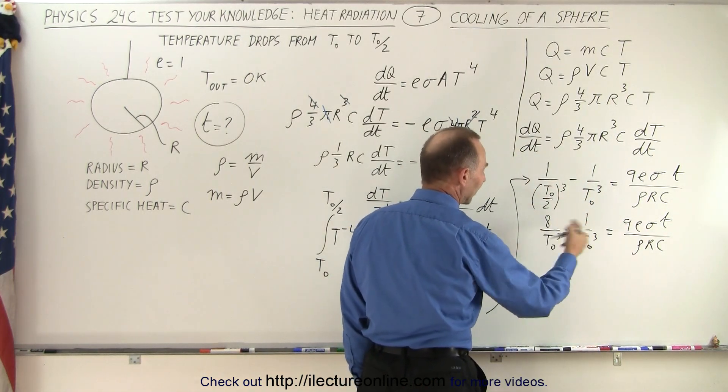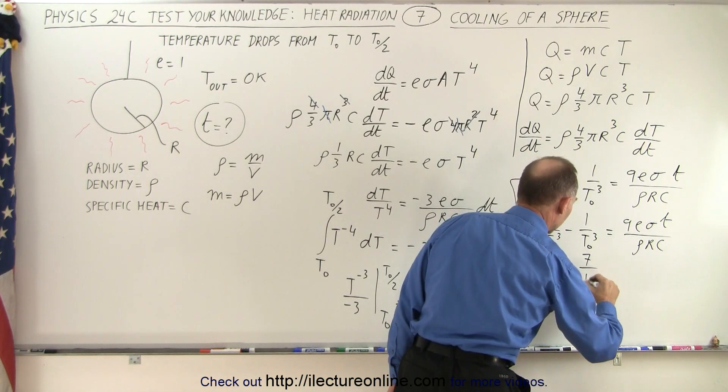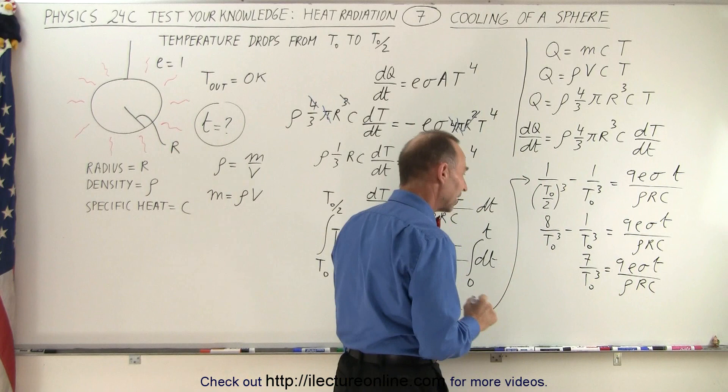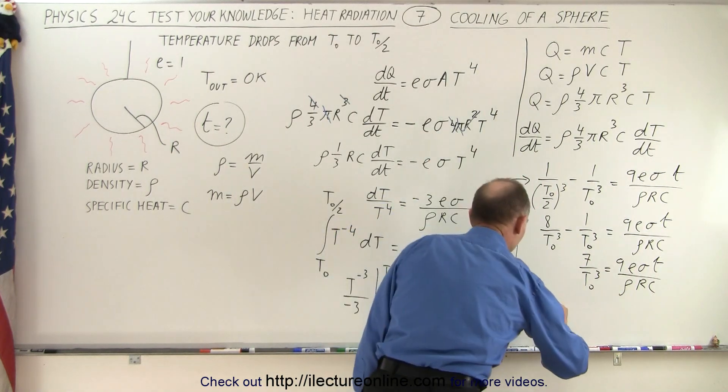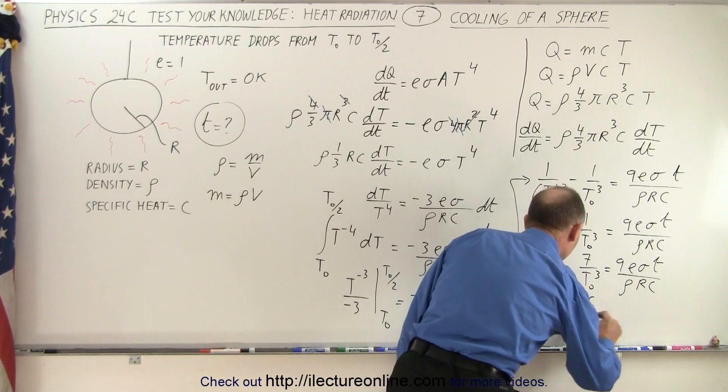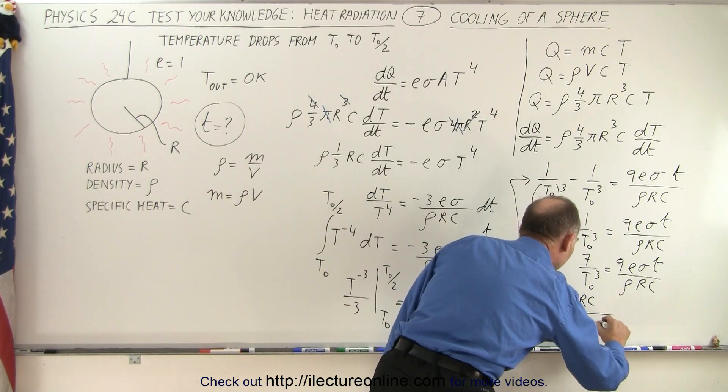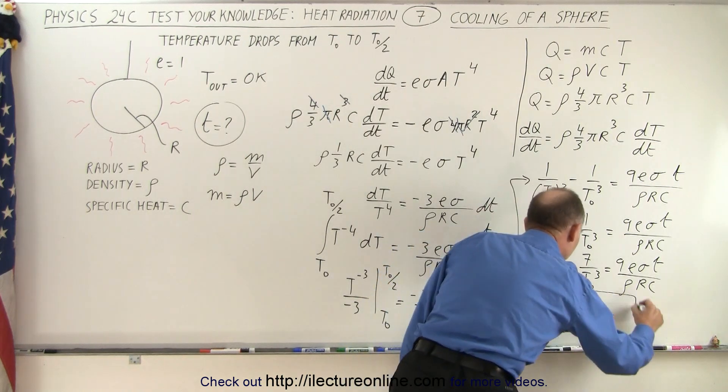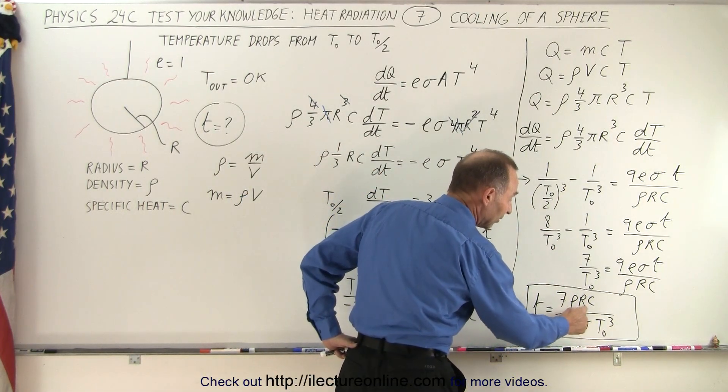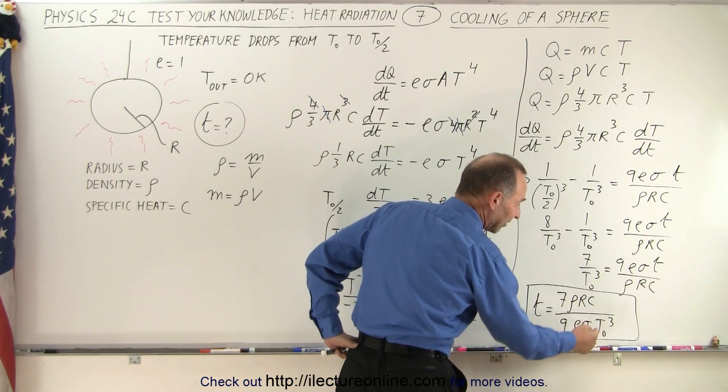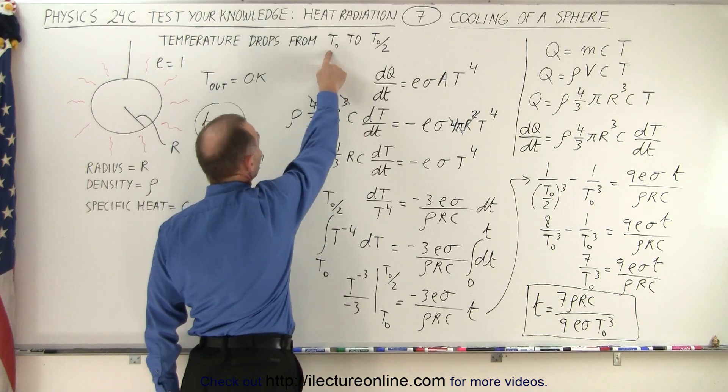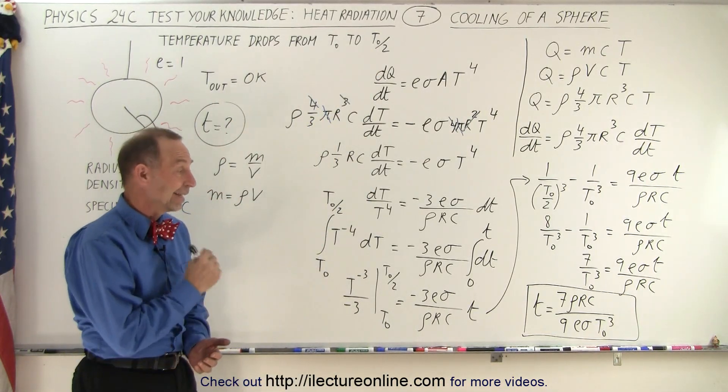And finally, solving that for t, time equals 7ρRC in the numerator divided by 9εσT₀³. And there we go. Seems like an interesting equation, but of course all they've given us was the density, the radius, the specific heat. We know these two are constants, and that's the initial temperature quantity cubed, the 7/9 factor. And that's the amount of time it will take for the temperature to drop from the initial to the final T₀/2. And that is how it's done.